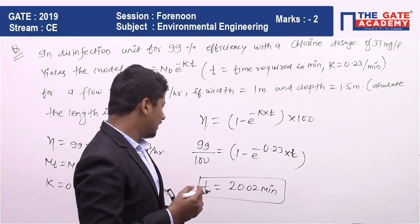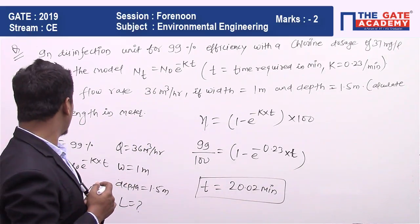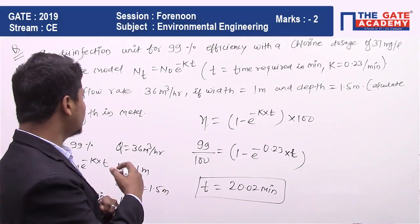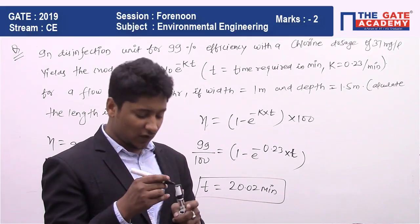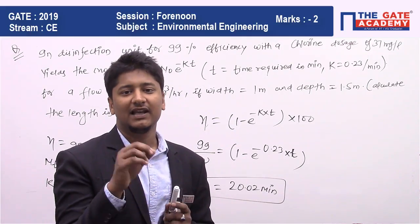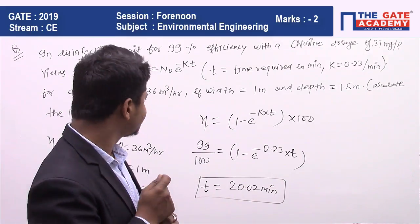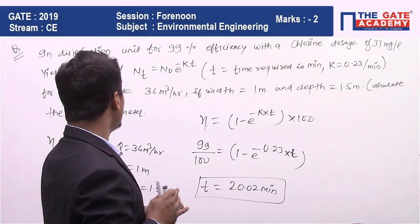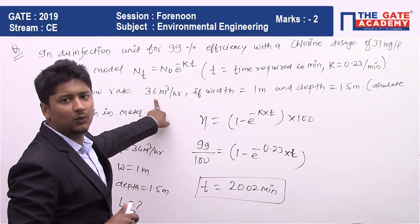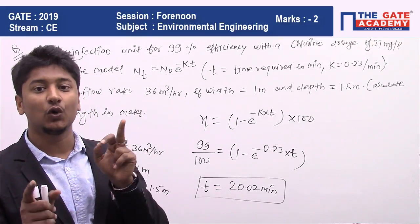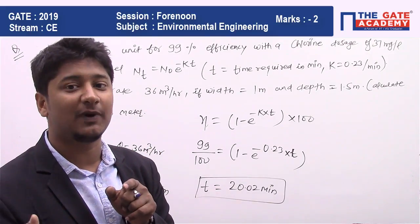Now time you have. Now other things I am doing: you have data like flow rate is 36 meter cube per hour and you want time. So I think all of you are aware of this: Q is nothing but A into V. From there we can calculate what is the velocity, and if you know the velocity and time, then you can calculate the length part.